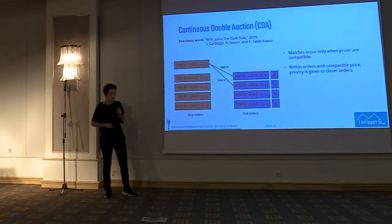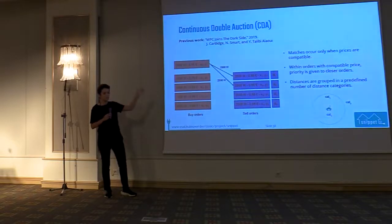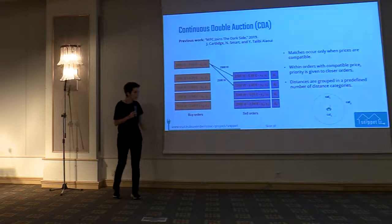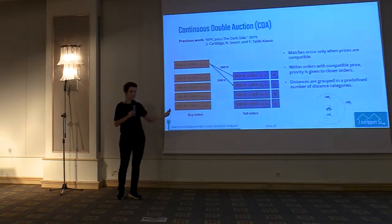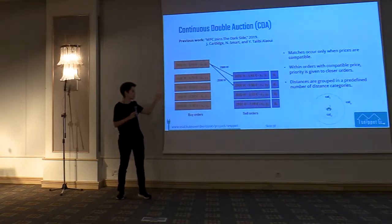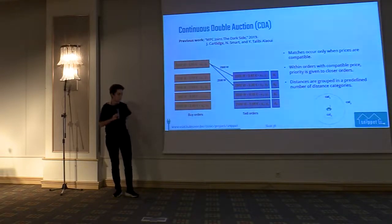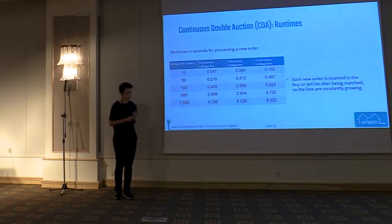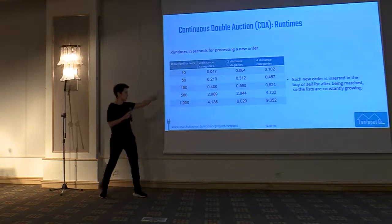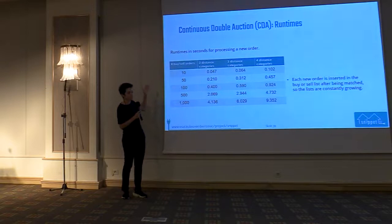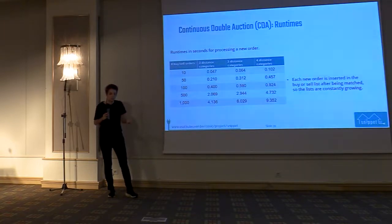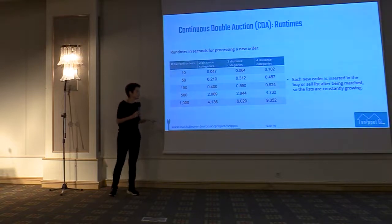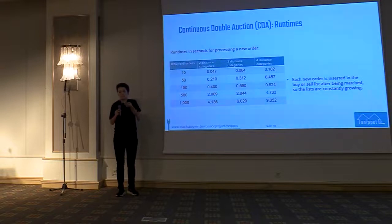Fully ordering the different distances would be very expensive, so it's easier to divide them into categories. First we match orders in the closest category, then move to the next one. We performed experiments running this with different amounts of orders and different numbers of distance categories. Processing time reaches at most 10 seconds per new order, but this can be too slow if we receive too many orders or have too many participants. So this continuous double auction algorithm is good only when not working with too large a population.